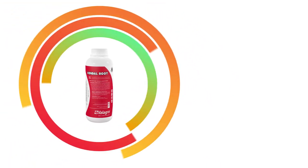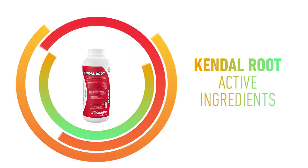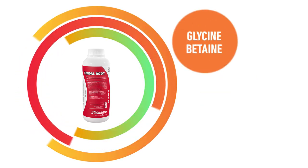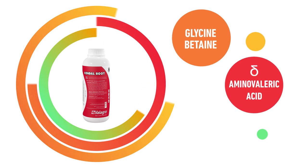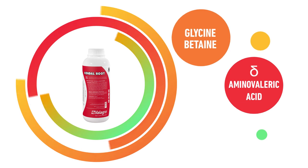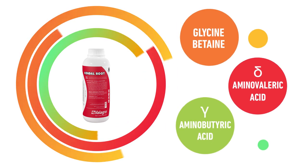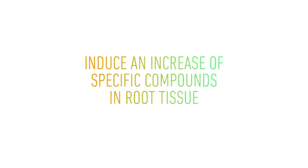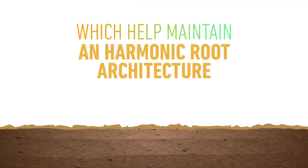In fact, Kendal Root active ingredients such as glycine betaine, amino valeric acid, and aminobutyric acid induce an increase of specific compounds in root tissue which help maintain a harmonic root architecture.